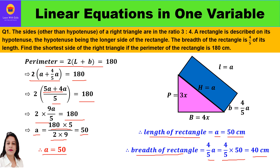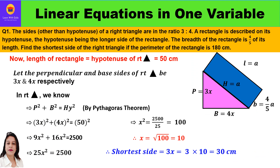Now we have calculated the length of the rectangle as 50 centimeters and the breadth as 40 centimeters. This length is equal to the hypotenuse, so hypotenuse is also 50 centimeters. Now, perpendicular is 3x, base is 4x, and hypotenuse is 50. We can apply the Pythagoras theorem, which says perpendicular squared plus base squared equals hypotenuse squared.